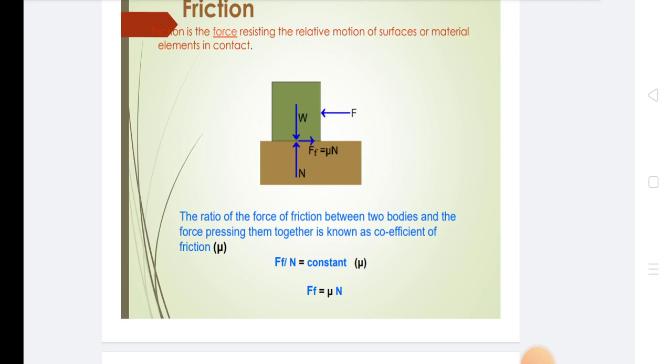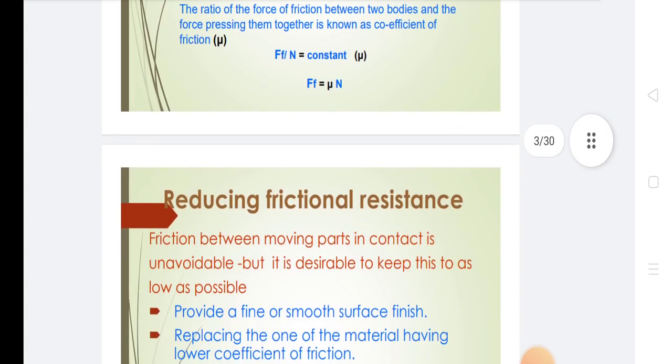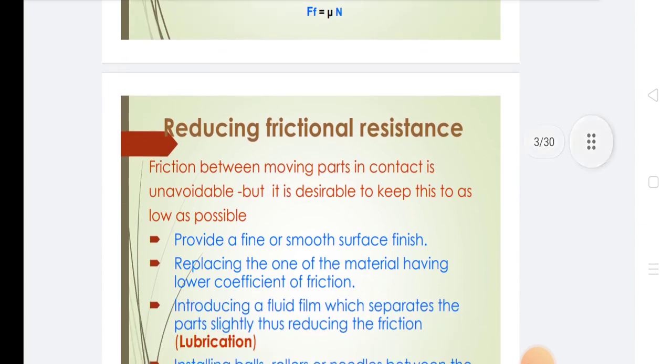It is denoted by mu. Friction between moving parts in contact is unavoidable, but it is desirable to keep it as low as possible.